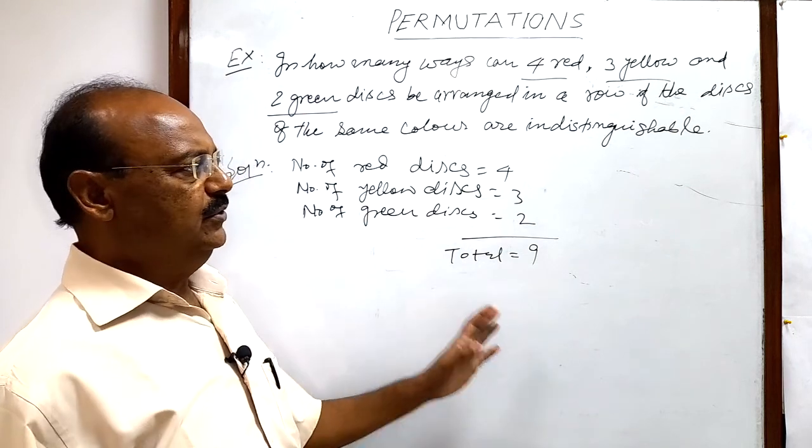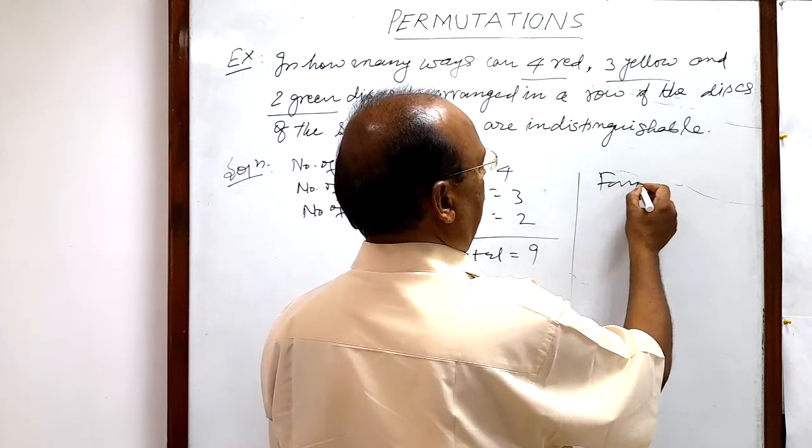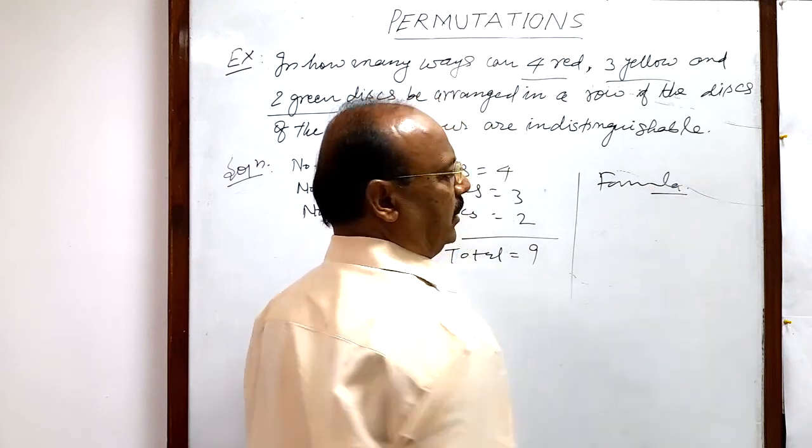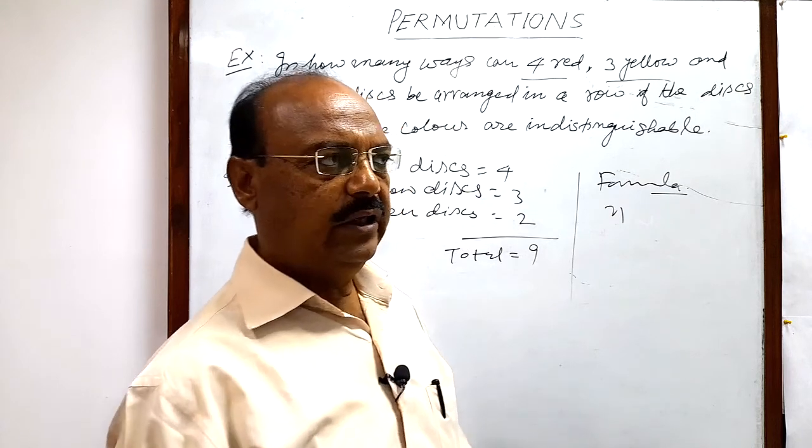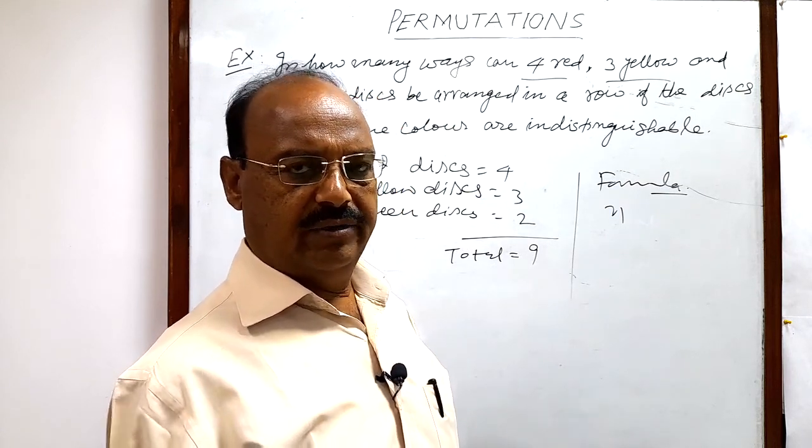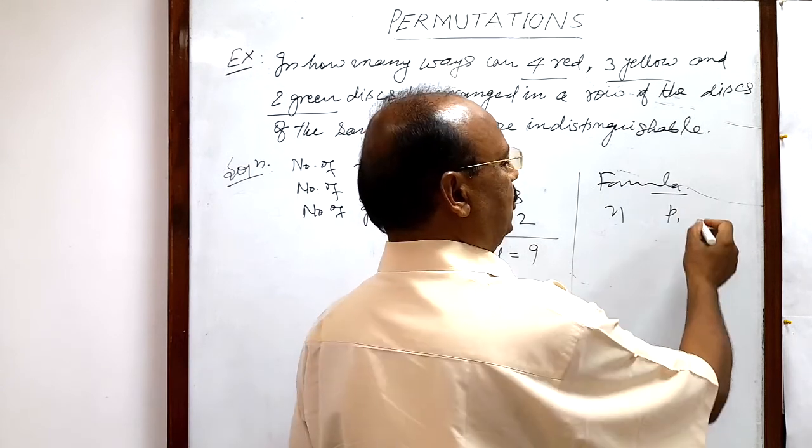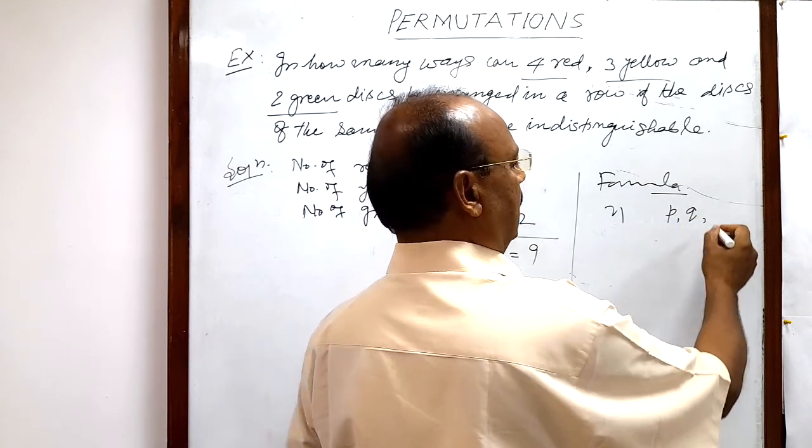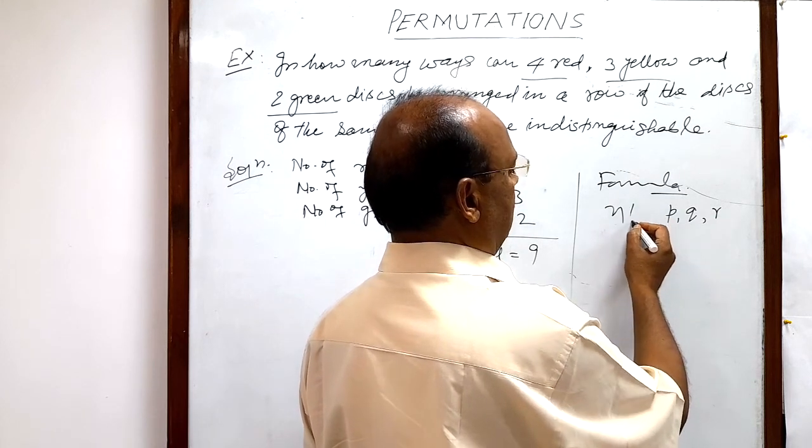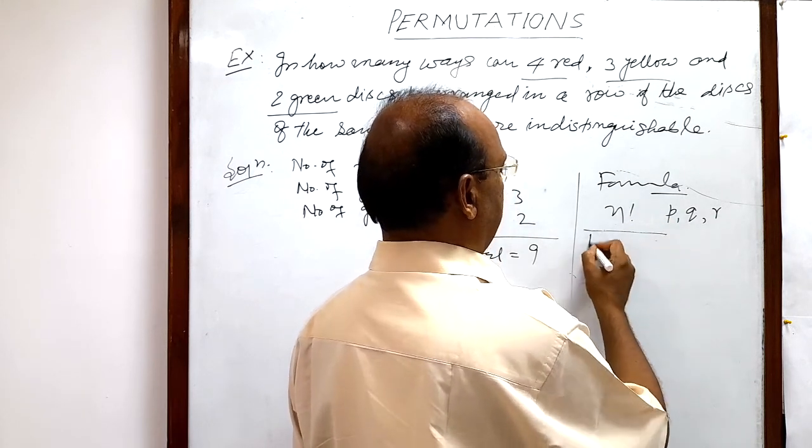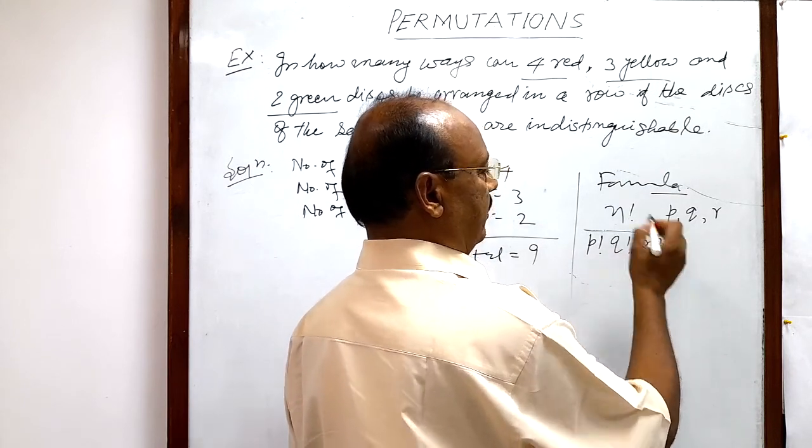In the previous video we discussed a formula. If total number of objects is n, but all the objects are not of different kind—suppose p objects are of one kind, q objects are of one kind, and r objects are of one kind—then total number of arrangements is n factorial divided by p factorial, q factorial, r factorial.